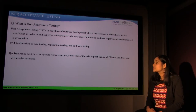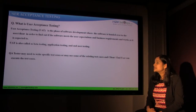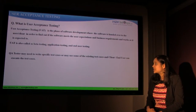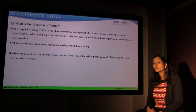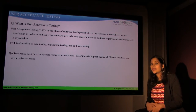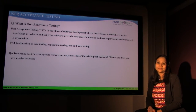UAT is also called beta testing, application testing, or end user testing. A QA tester may need to write specific test cases or may use some of the existing test cases, and the client or the end user executes those test cases.